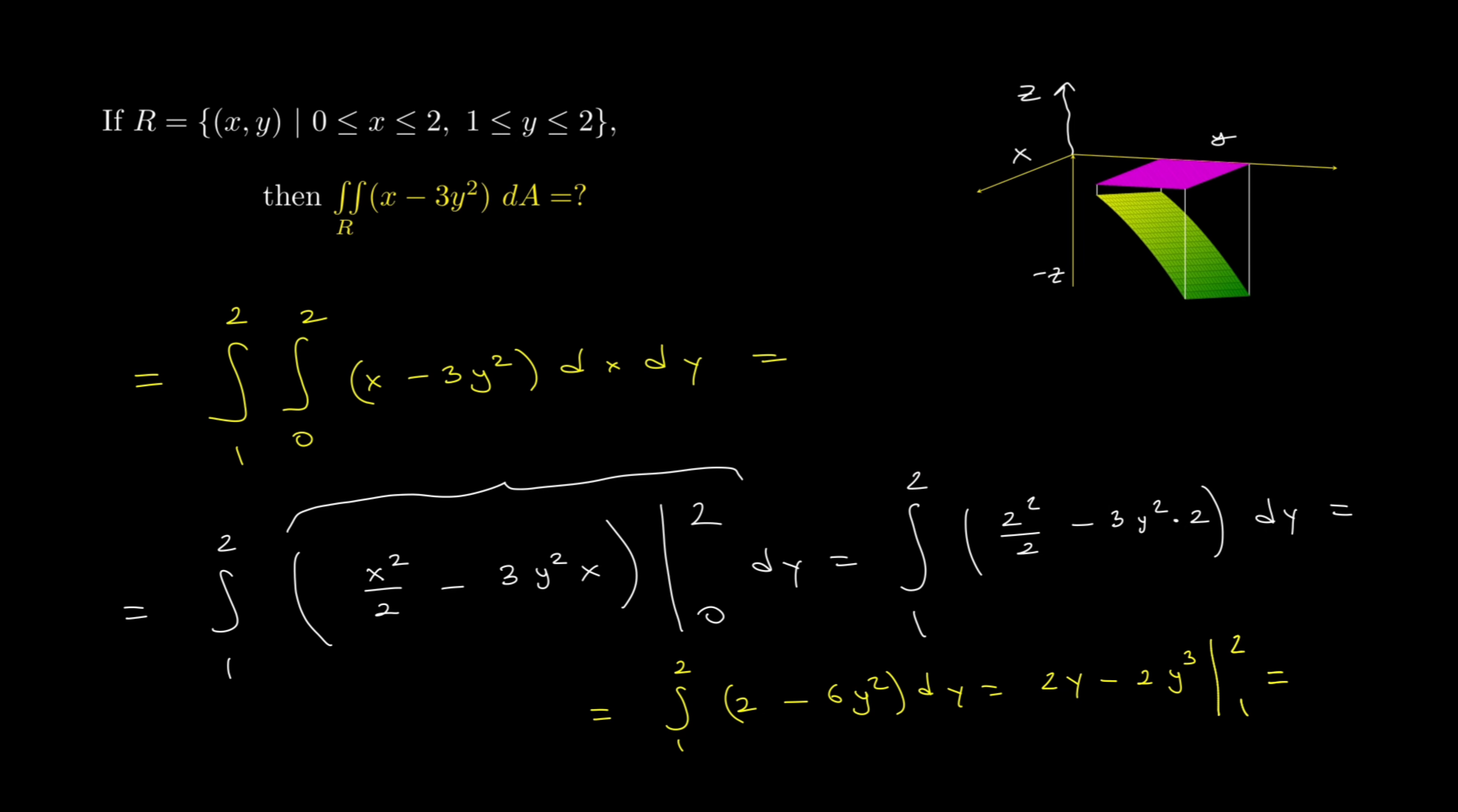So if you plug 2, let me evaluate those 2 values up here. If you plug 2, so 2 times 2 minus 2 times 2 cubed, so that's 4 minus 4 minus 16, and it's negative 12. What about if I plug 1? 2 times 1 minus 2 times 1 cubed, so that's 2 minus 2 which is 0. So I have negative 12 minus 0, that is just negative 12.